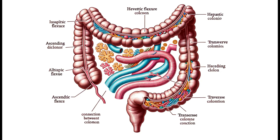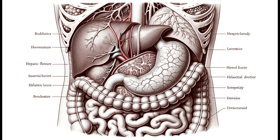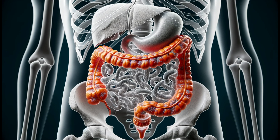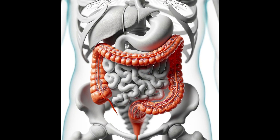What is the hepatic flexure? It is a sharp bend in the colon found in the right upper quadrant of the abdomen, also referred to as the right colic flexure, and serves as an essential landmark for surgeons and radiologists. The hepatic flexure is located between the ascending colon and the transverse colon; the ascending colon connects to the small intestine, and the hepatic flexure lies just below the liver. It facilitates digestion by helping move food through the intestines — the ascending colon absorbs water and electrolytes, while the descending colon compacts waste into stool.